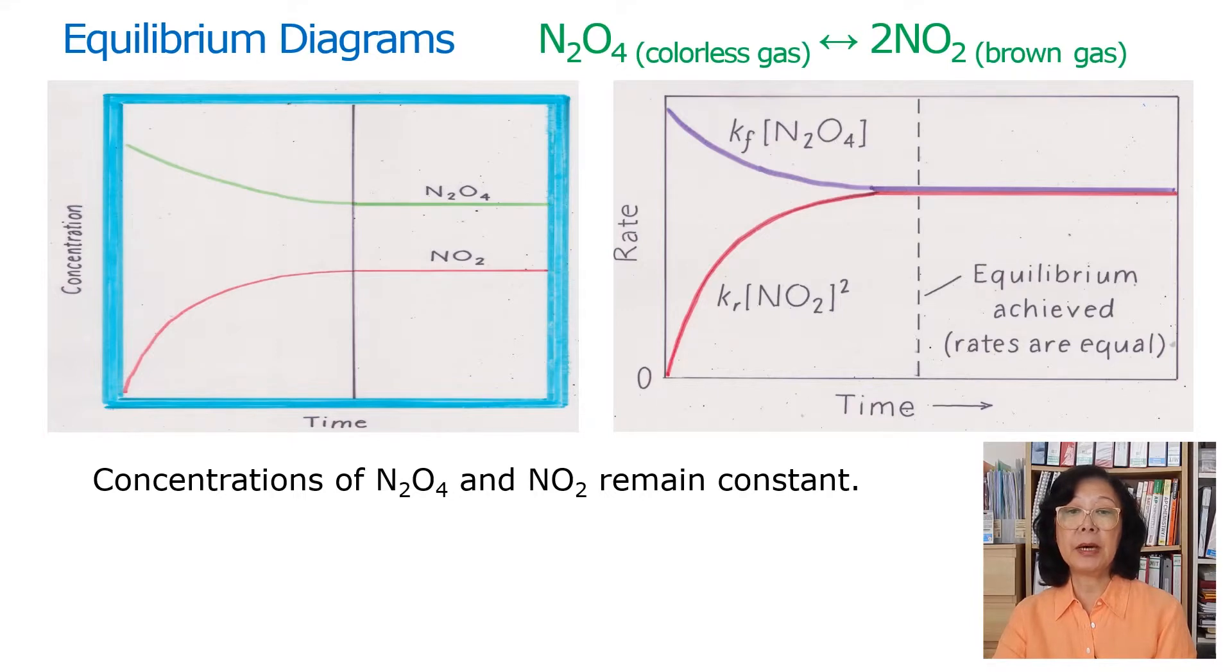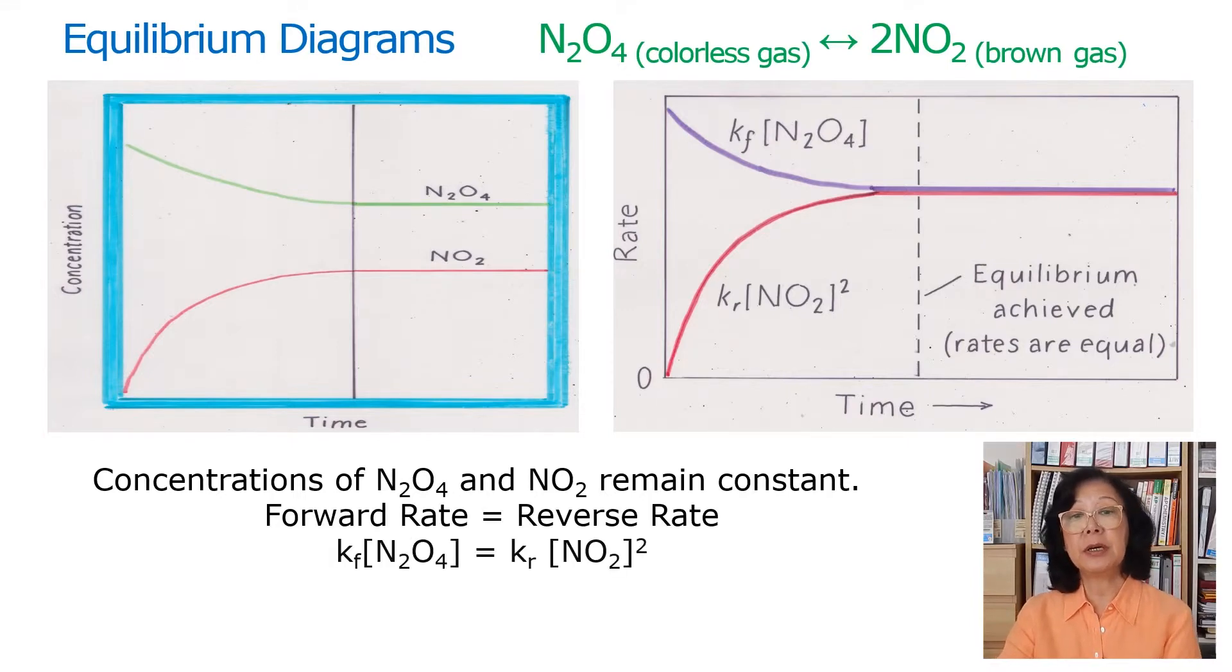When forward rate is equal to the reverse rate, represented by KF times N2O4 concentration equal to Kr times NO2 concentration.